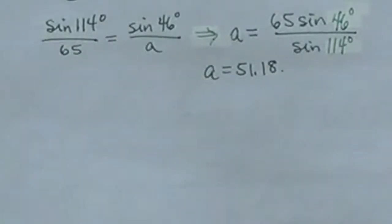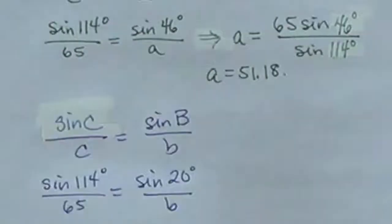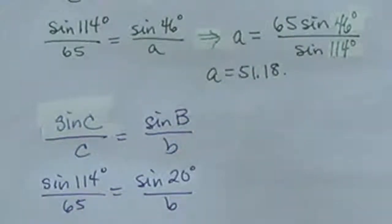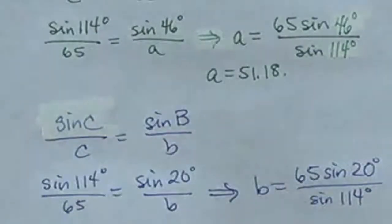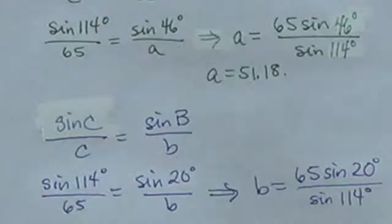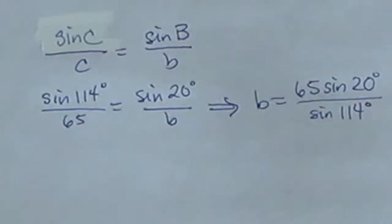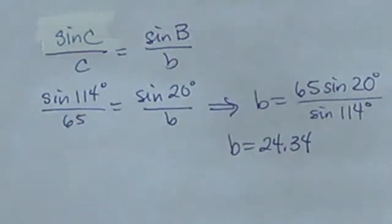To find side length B, we do the same thing, except now we'll use angle B. Sine of C over c equals sine of B over b, so sine of 114 degrees divided by 65 equals sine of 20 degrees divided by B. Solving, B equals 65 times sine of 20 degrees divided by the sine of 114 degrees, which gives B approximately 24.34 units. Now that we have angle C and side lengths A and B, we have solved our triangle.